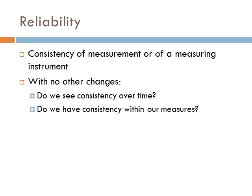Let's start with reliability. Reliability is the consistency of a measurement or a measuring instrument. If we measure something today, we want it to be relatively consistent over time and place. So if I say that you're five foot six today, two months from now, barring some major change, you should probably still be five foot six. We need a way of measuring things that is consistent over time.